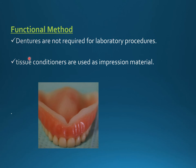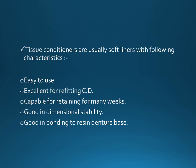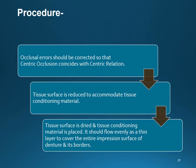Disadvantage: this technique requires more clinical and lab time. Alternatively, tissue conditioner can be used as the impression material — no lab procedure is required. The tissue conditioner appears as a translucent white material that is placed on the denture base tissue surface; the patient closes the mouth and performs border molding movements, and the material sets in place. As a soft liner, it is easy to use, excellent for refitting complete dentures, capable of retaining for many weeks, and has good dimensional stability and bonding to resin.